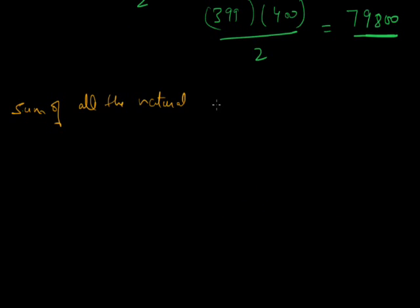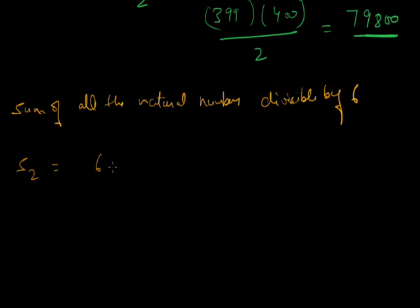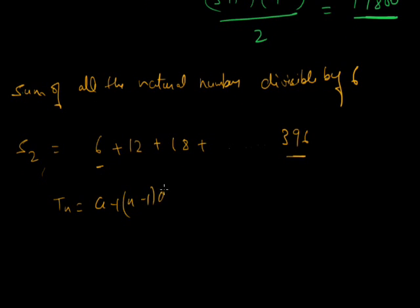We need to find how many terms are in the AP from 6 to 396. Using the nth term formula: 396 = 6 + (n−1)×6, solving gives n = 66. The sum of this AP is (66/2) × (2×6 + 65×6) = 33 × 402 = 13,266.